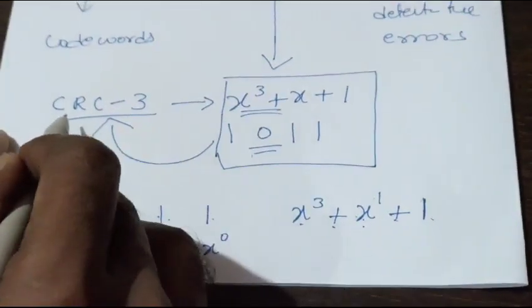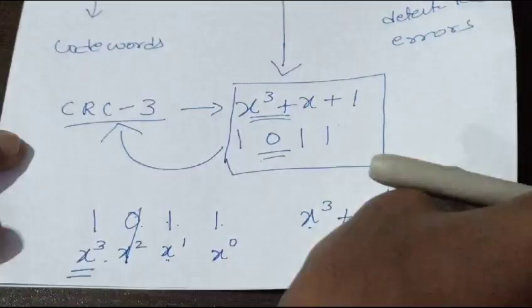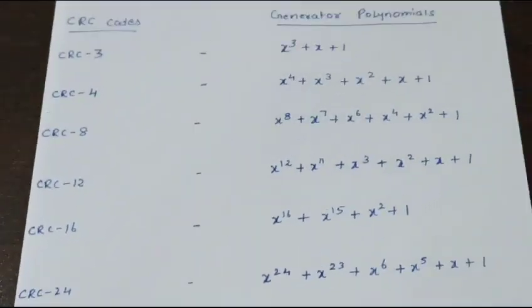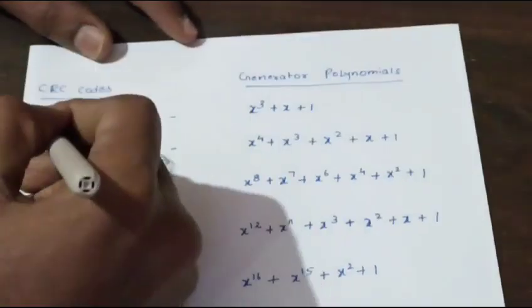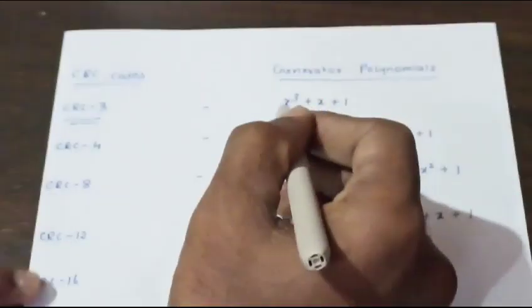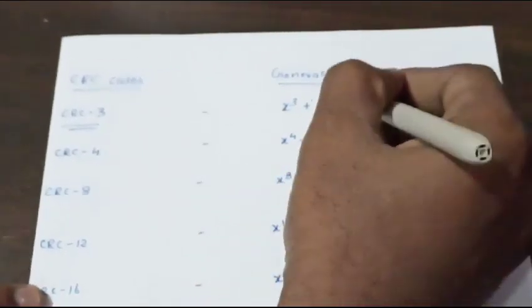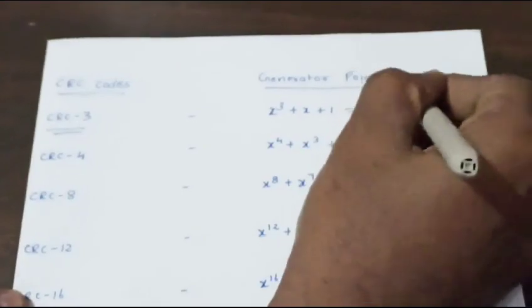This is the standard generated polynomial for CRC-3. Similarly, we have different types of CRC codes. For CRC-3 it is x³+x+1, which is nothing but 1011.